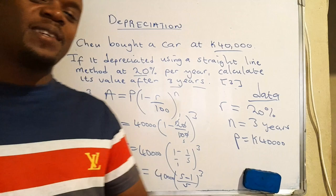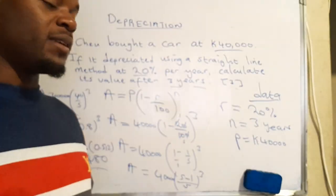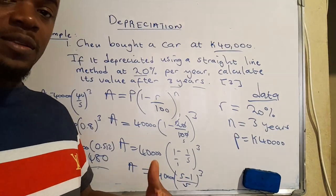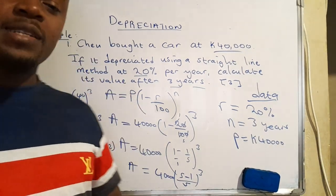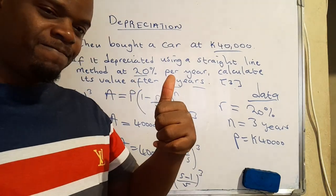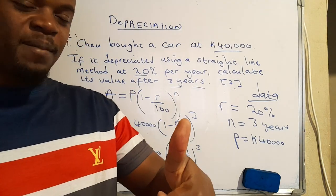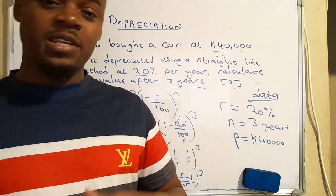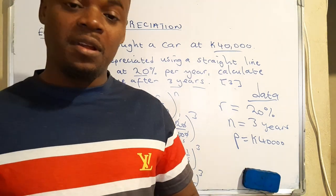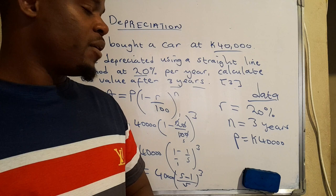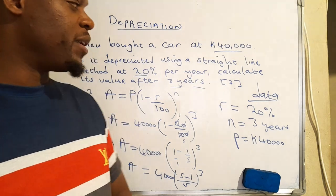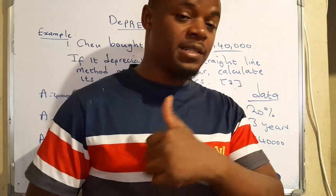So from 40,000, after depreciation the car will now cost 20,480 and this is making sense in that after it has lost value, after it has actually depreciated, it won't cost as much as it had cost in the first place when it was bought. So friends, that's how we calculate depreciation. If you like the video, make sure that you give it a thumbs up and turn on the notification bell and subscribe. Don't forget to share with others who'd love to be learning mathematics. I'll be rolling out more videos within this coming week, so make sure that you're in tune. Thank you so much, leave a comment in the comment section.